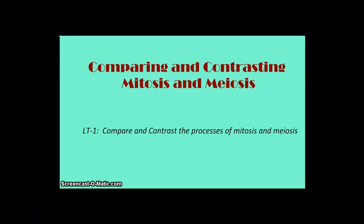This video lecture is going to be about comparing and contrasting the processes of mitosis and meiosis. Mitosis is the cellular process that normal cells in your body go through to create extra cells, either for growth, healing injury, or asexual reproduction. Meiosis is the process that occurs in order to create cells that can be used for sexual reproduction.